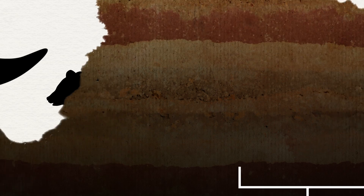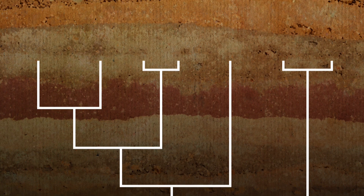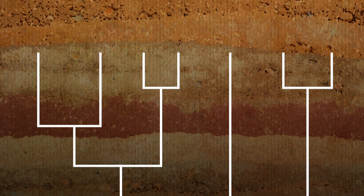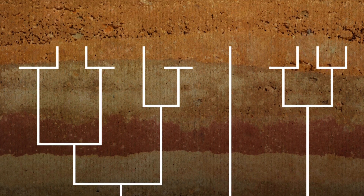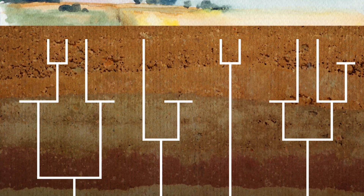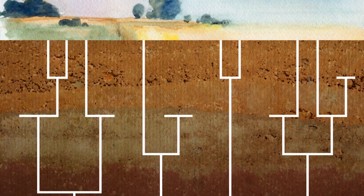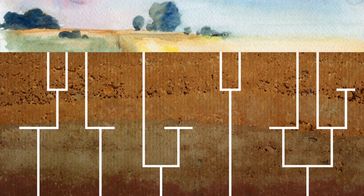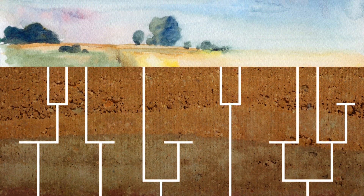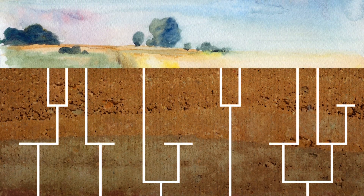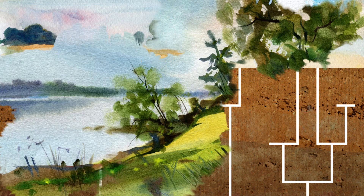The fossil record provides strong evidence for evolution. It shows us that evolutionary change tends to be gradual. It gives us physical proof of extinction and of single species splitting into two. And it contains creatures that are transitional forms between one group of species and another.